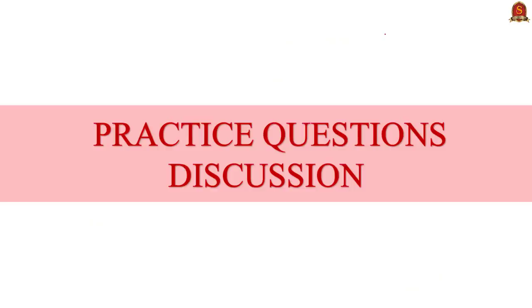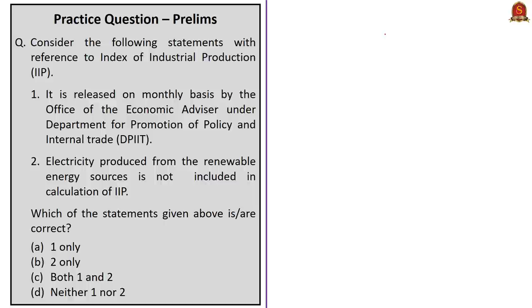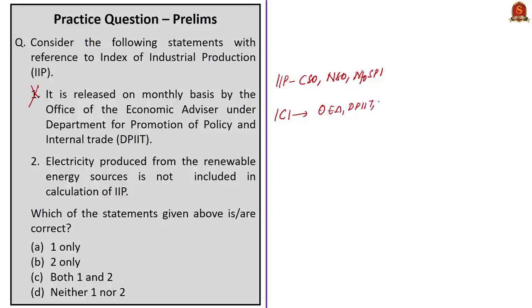Let us take up the practice questions. Consider the following statements with reference to the Index of Industrial Production. Statement 1: It is released on a monthly basis by the Office of Economic Advisor under the Department of Promotion of Policy and Internal Trade. This is incorrect — IIP is released by the Central Statistics Office under the National Statistical Office of the Ministry of Statistics and Programme Implementation. Statement 2: Electricity produced from renewable energy sources is not included in the calculation of IIP. This is also incorrect as renewable energy electricity is included. The correct answer is option D — neither one nor two.